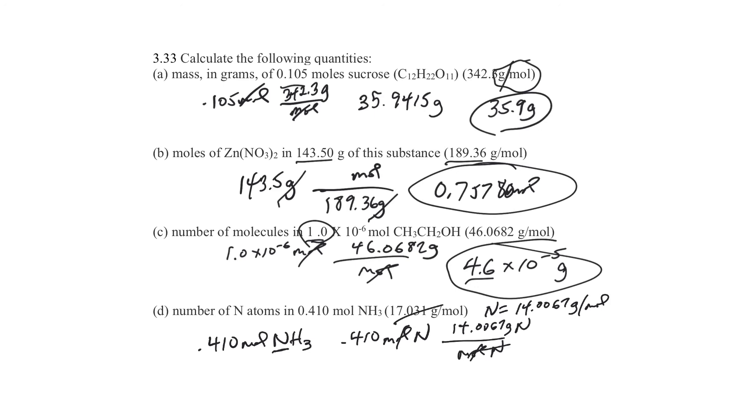So I'm going to multiply this, 0.41 times 14.0067, and I'll have 5.7427 grams. I've got three significant digits, so it's going to be 5.74 grams.